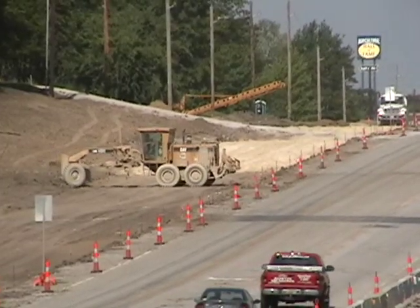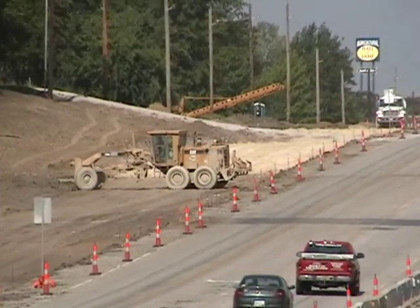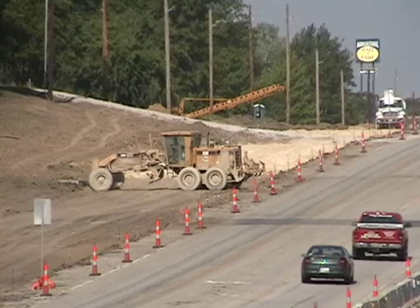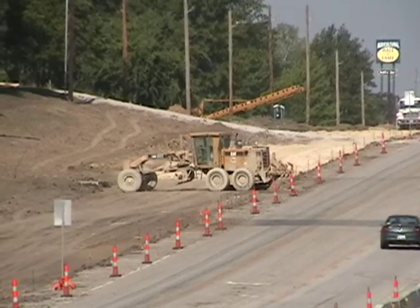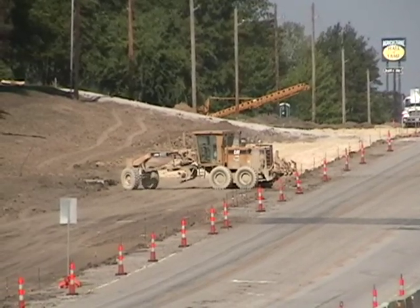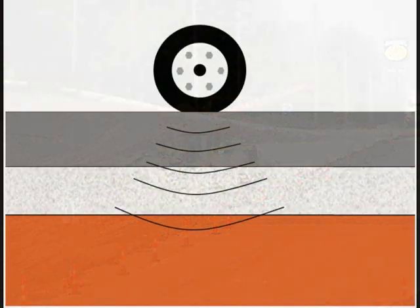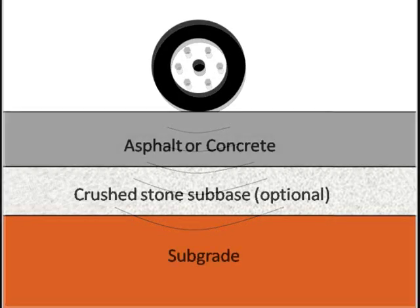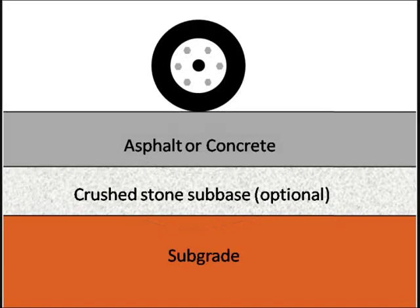The construction of high-quality roads requires the commitment of large amounts of material and labor combined with good planning, engineering, and construction practices. Modern roads are engineered systems designed to spread wheel loads on stiff surface layers, such as asphalt or concrete, to the much softer natural soil beneath called the subgrade.